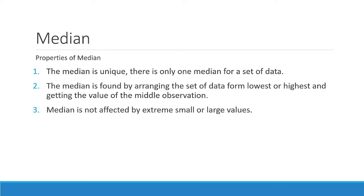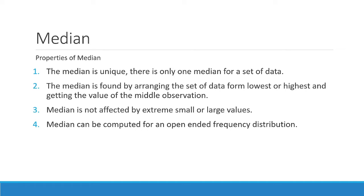Median is not affected by extreme or small/large values because we are only considering the data in the middle of the data array. Also, median can be computed for an open-ended frequency distribution — that is one difference between median and mean. In median, you can have open-ended frequency distributions, which are values that have 'less than some value' or 'greater than some value.'